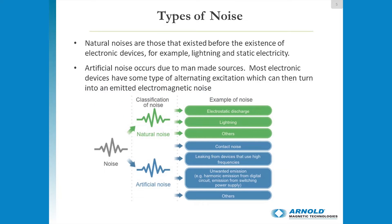So what types of noises are we going to be looking at? Taking a look at this slide, we have natural noises and we have artificial noises. For this presentation and our technologies we're going to be discussing today, we're going to look at artificial noises — those being contact noises, leaking from devices that use high switching frequencies and unwanted emissions, harmonics, for example, from a motor controller for a piece of rotating electrical machinery, and then other types of artificial noises.